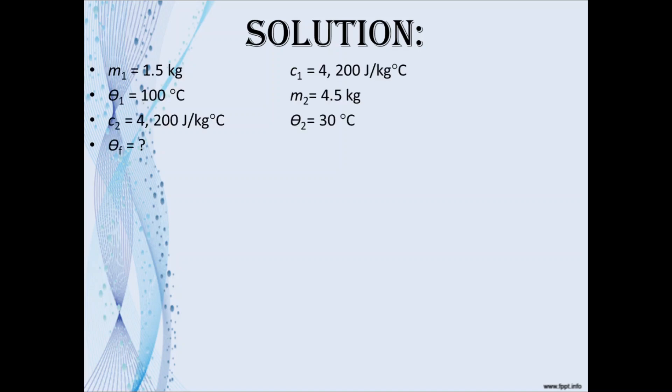Our solution: we start off by listing our givens. The mass of the hot water is 1.5 kilograms. Since it is water, its specific heat capacity is 4200 joules per kilogram degree Celsius. The initial temperature of the hot water, since it is boiling at sea level, would be 100 degrees Celsius.